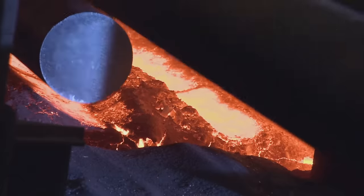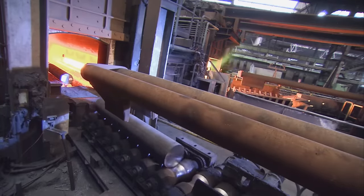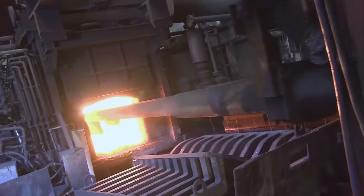An automated computer-controlled rotary hearth furnace pre-heats the billets to a forming temperature of around 1280 degrees Celsius in preparation for rolling.